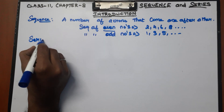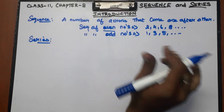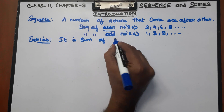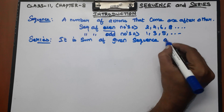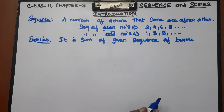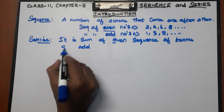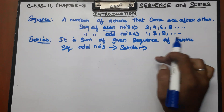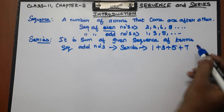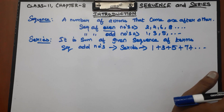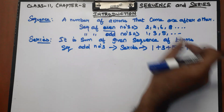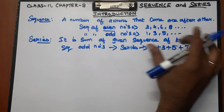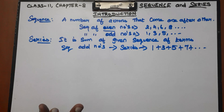Next, the definition of a Series. A series is the sum of a given sequence of terms — it is the addition of the terms of a sequence. For example, even numbers, odd numbers, prime numbers, composite numbers form a sequence, and when you add them, you get a series.